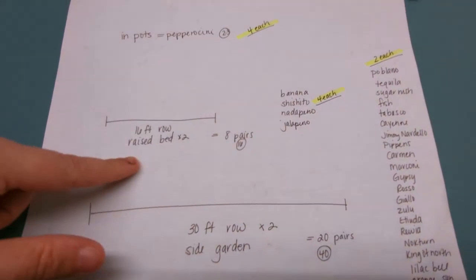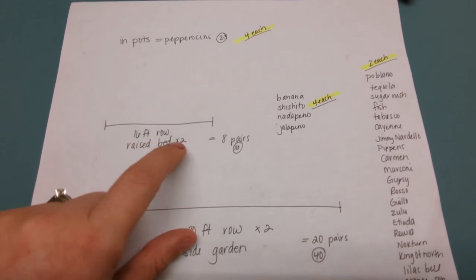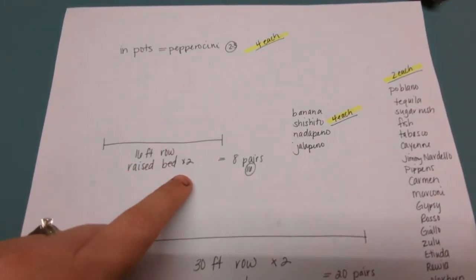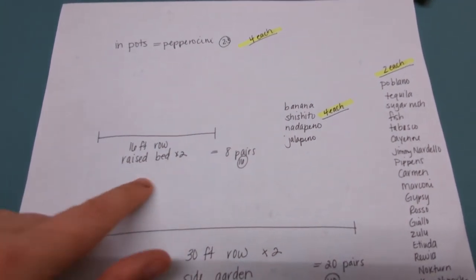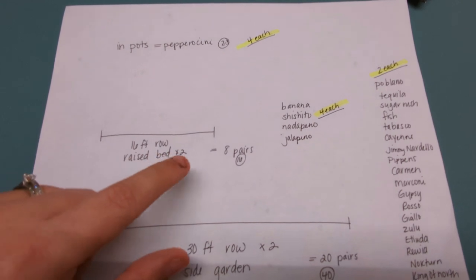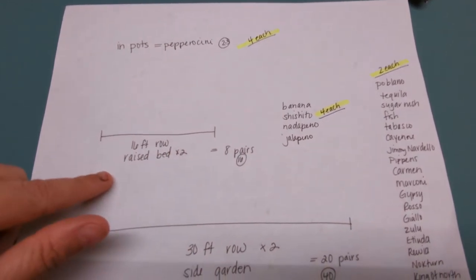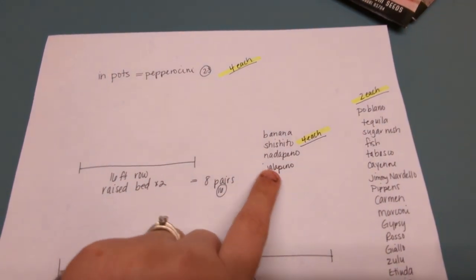In this raised bed back here, these eight pairs, I've decided that I'm going to do these peppers because I know this bed performs well. It's got very good soil in it. It's a raised bed. It's one of my very first raised beds. The soil has been cultivated and composted over and over again. So I know this is the best chance of success for my peppers. So these are the ones I want to make sure we do well with.